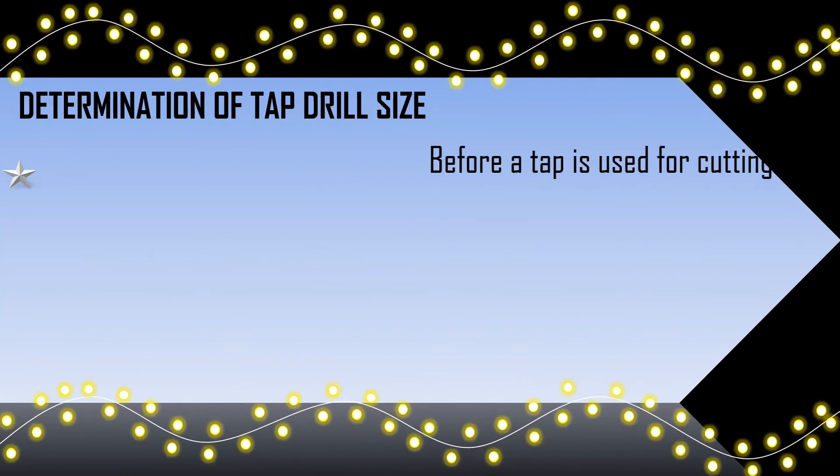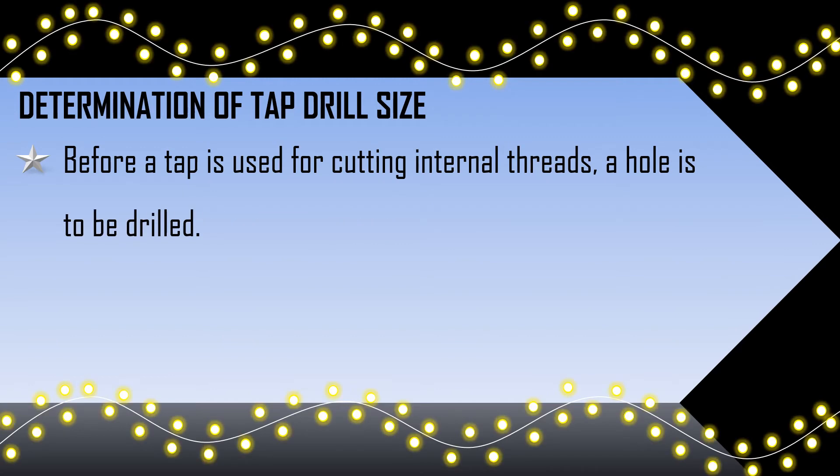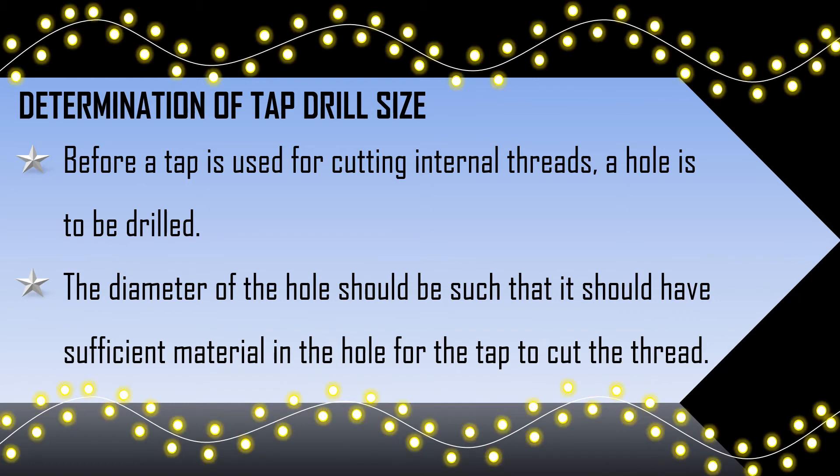Determination of tap drill size. Before a tap is used for cutting internal threads, a hole is to be drilled. The diameter of the hole should be such that it should have sufficient material in the hole for the tap to cut the thread.